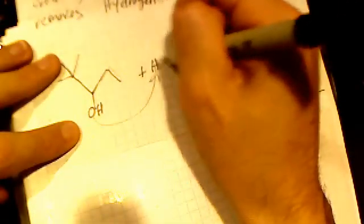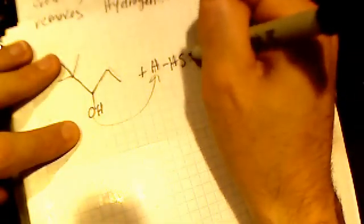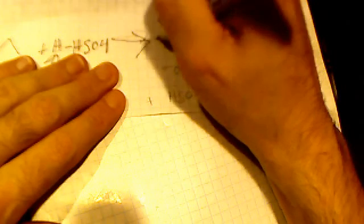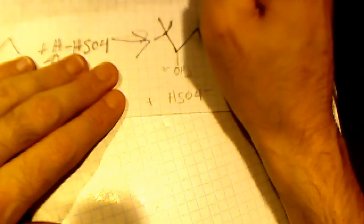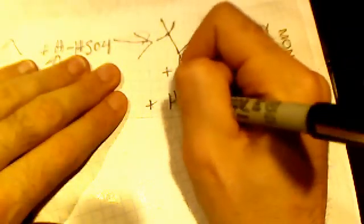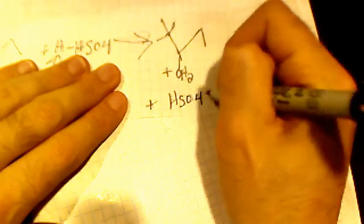So here's our molecule, plus our acid. The hydroxyl group picks up the highly acidic hydrogen from the H2SO4, and we're left with a protonated alcohol group here, plus HSO4 negative.